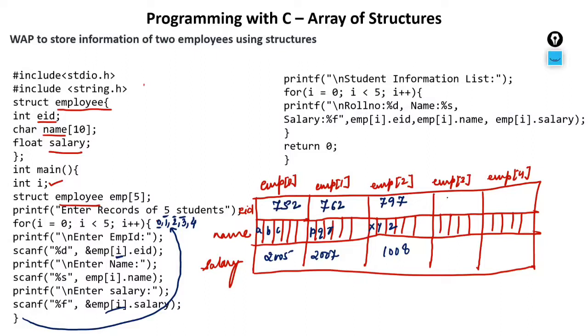Again it will go, value of i will become 3. Let this be 892 as employee ID. Name is James, J-A-M-E-S. And the salary is 20,000. Again it will increment to value 4.